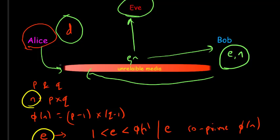We can also consider digital signatures. If Alice wants to send a message and provide authenticity — proving it was sent only by Alice — she can sign the message using her own private key. This message can then be delivered to Bob, and because it was signed using Alice's private key, it can only be verified using Alice's public key. This is how digital signatures work.